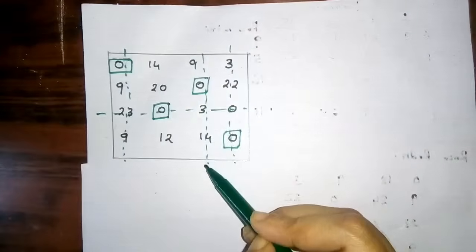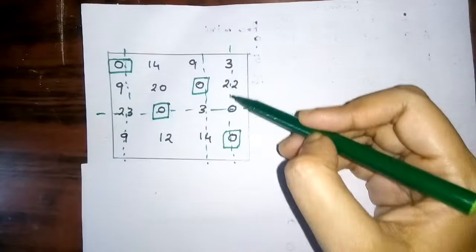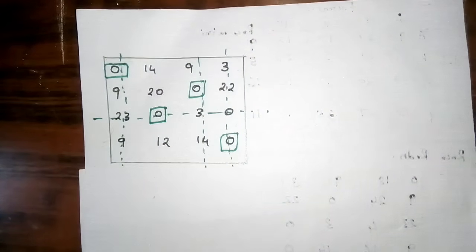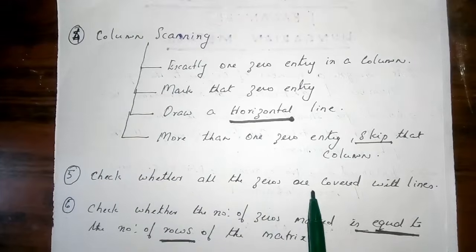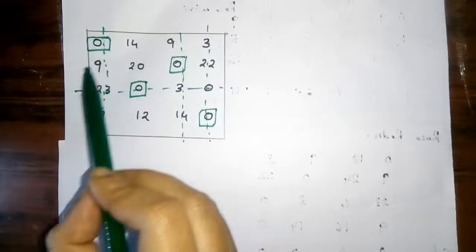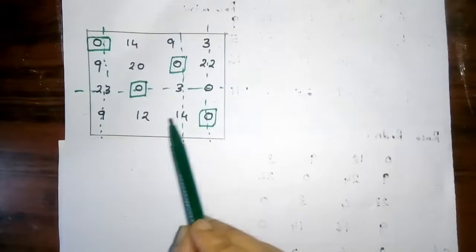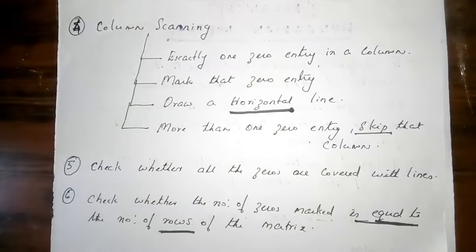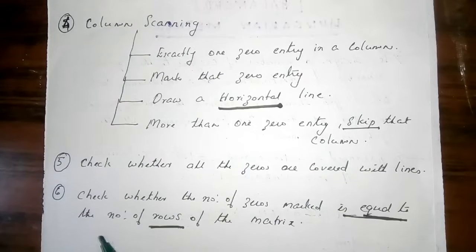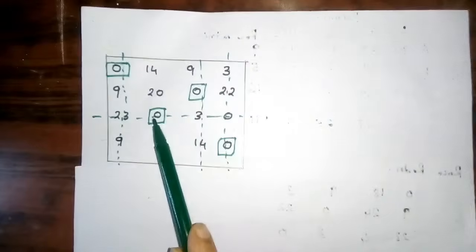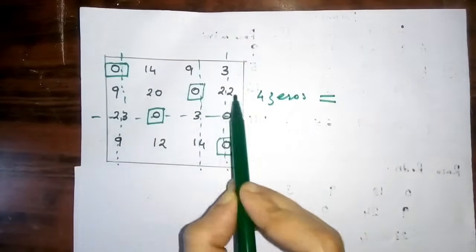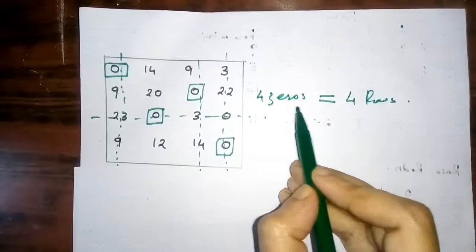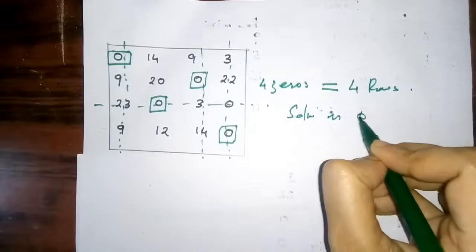Second and third columns are already crossed out. Next, check whether all zeros are covered with lines. Count the zeros marked: one, two, three, four — four zeros are marked. Check whether the number of zeros marked equals the number of rows: four zeros equals four rows. The solution is optimal.